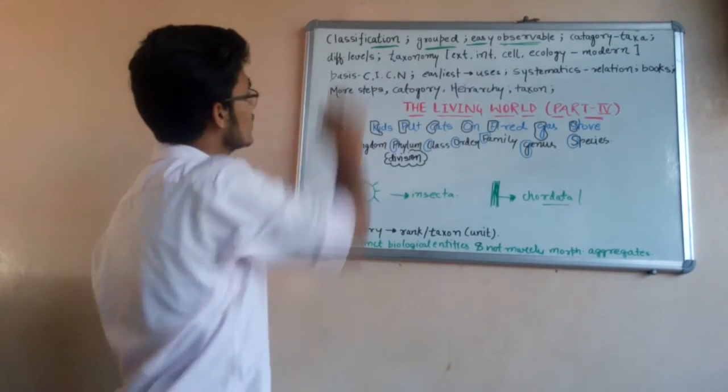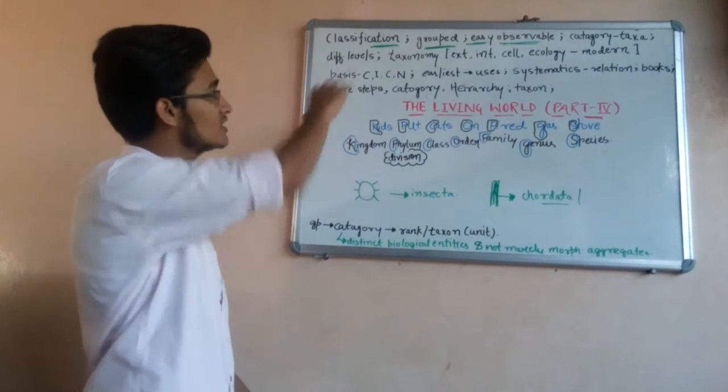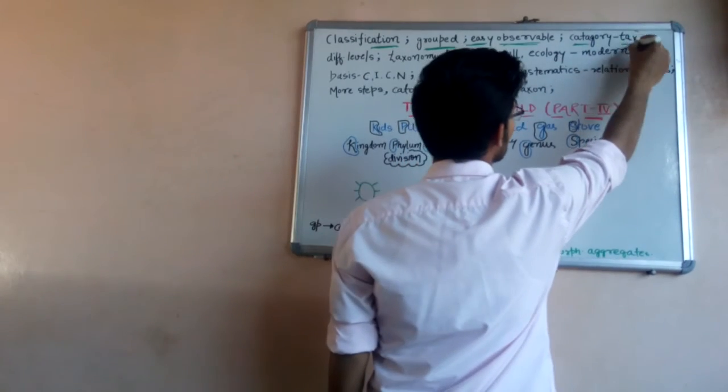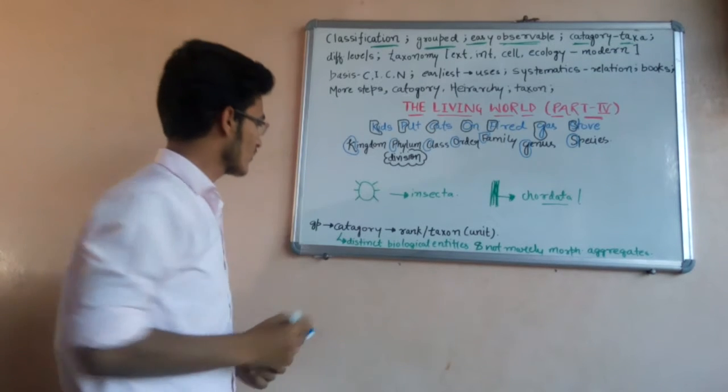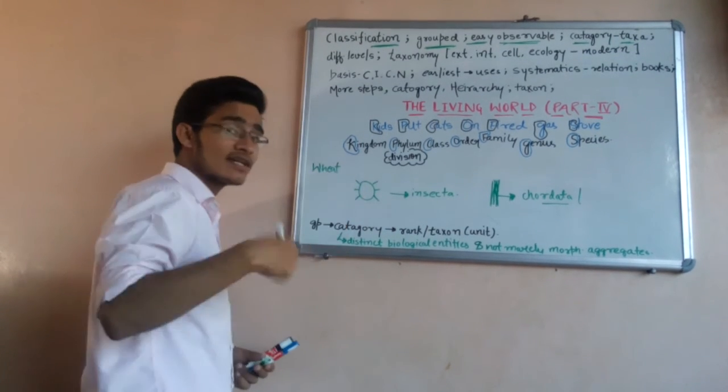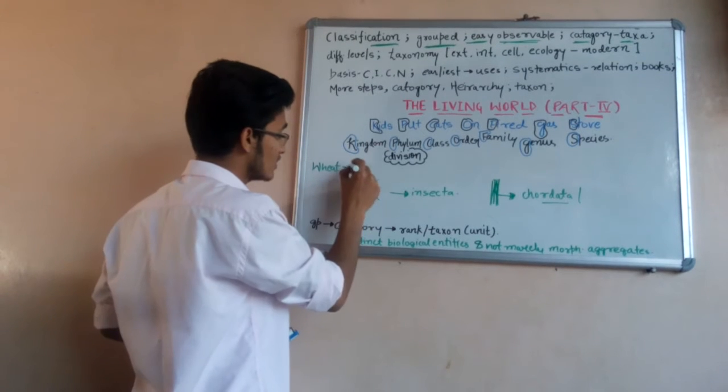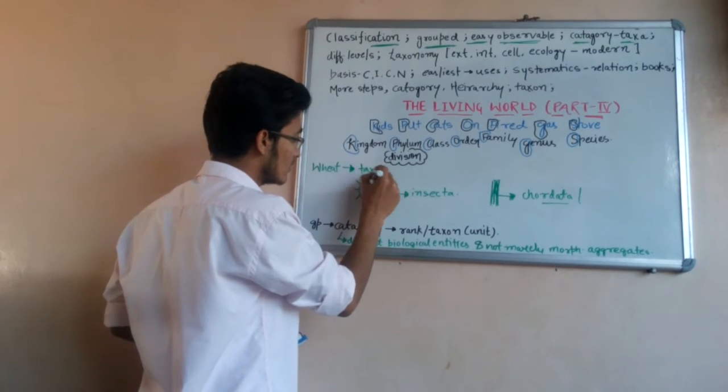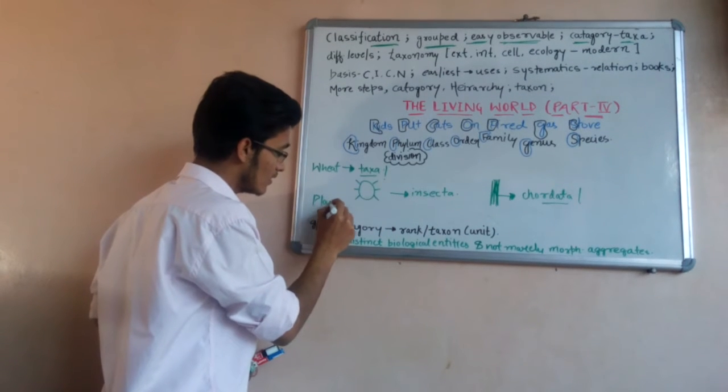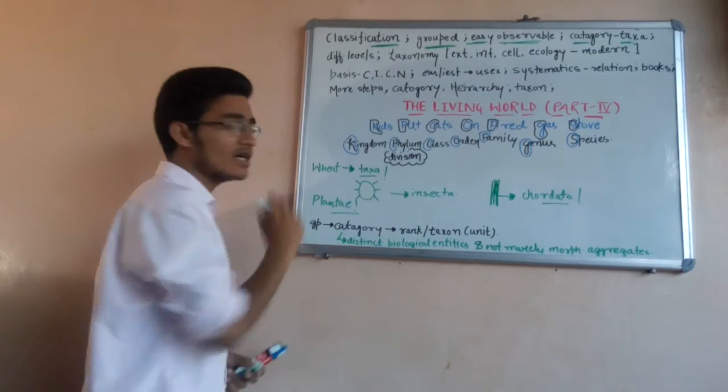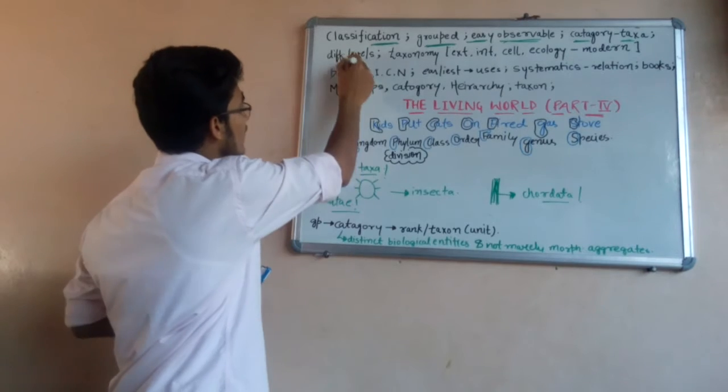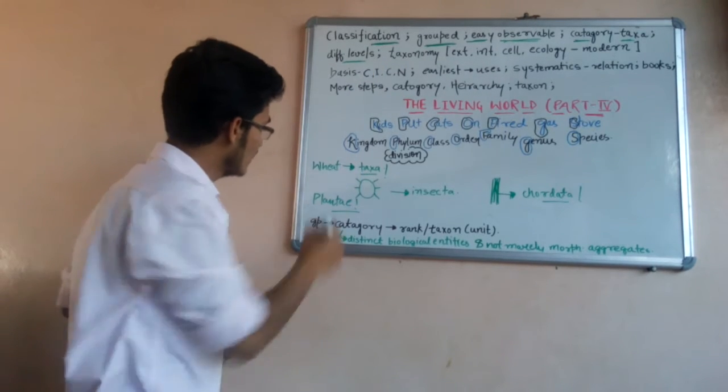Each and every category of classification is known as taxa. For example, we will talk about wheat. Triticum aestivum is a genus and species, that is also a taxa. This is a part of kingdom Plantae, so Plantae will also be a taxa. All the categories can be taxa but at different levels.